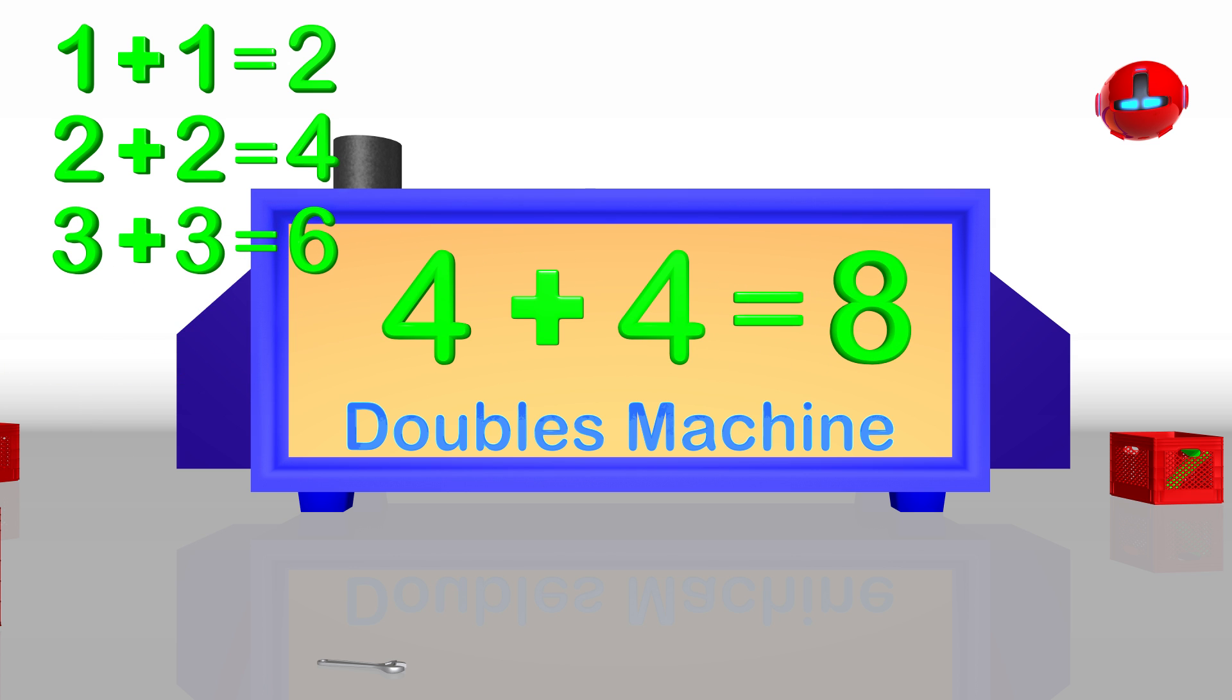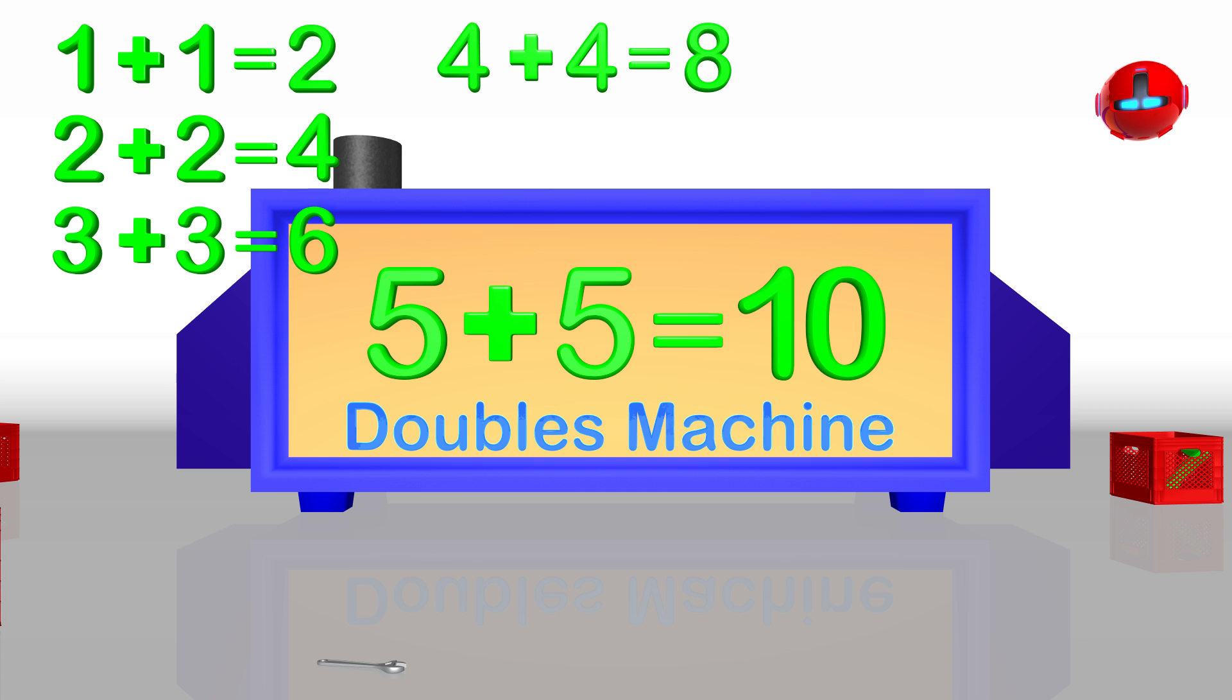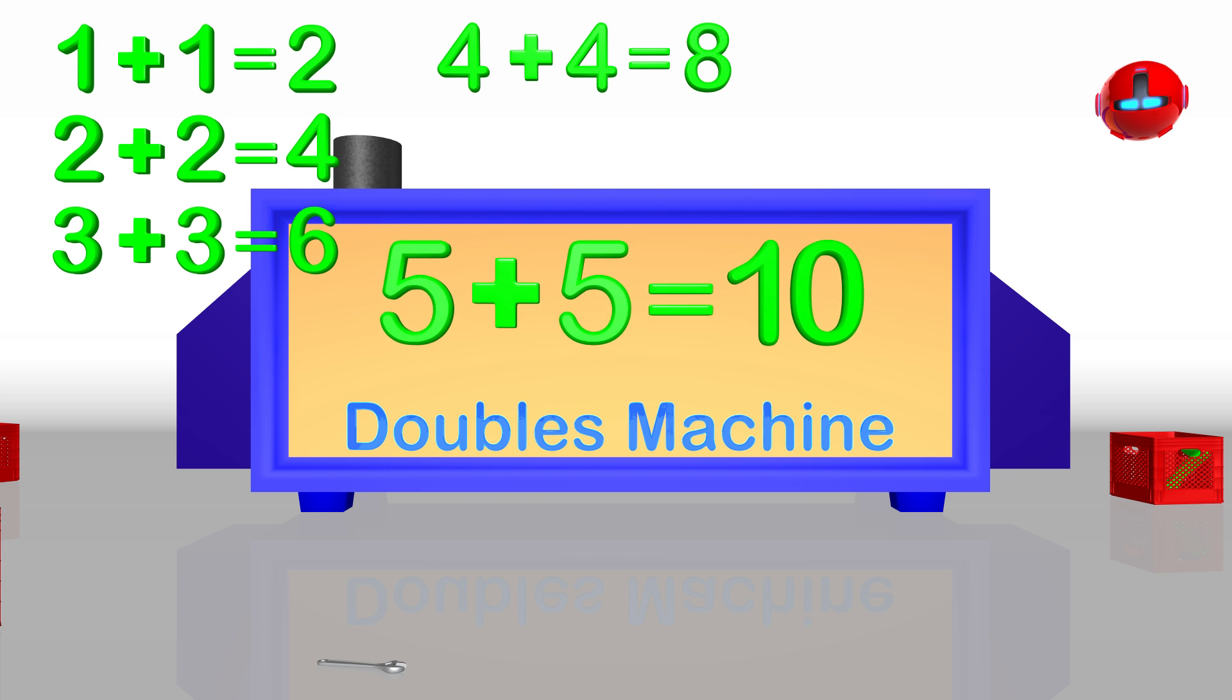Here is 4 doubled, which equals 8. This is 5 doubled, which equals 10. This machine only does doubles up to the number 5. It is important to memorize doubles in addition because it makes math so much easier when adding.